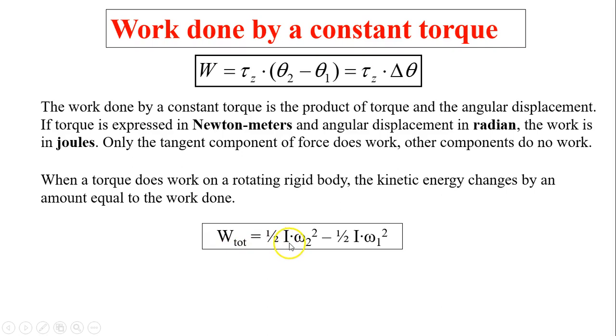So work total equals one-half I omega 2 squared minus one-half I omega 1 squared. This is the final angular speed squared minus the initial.